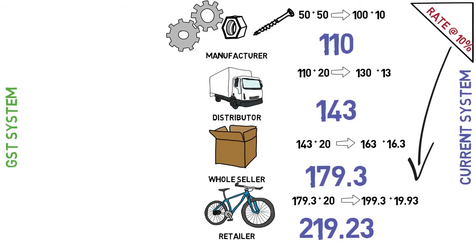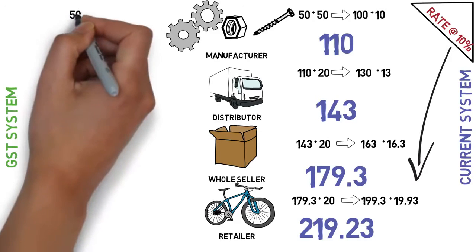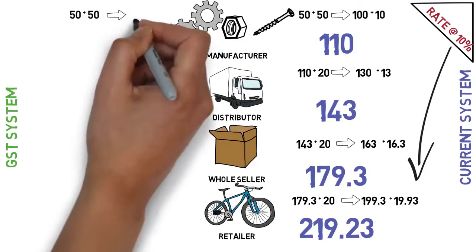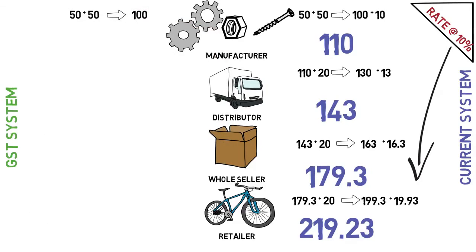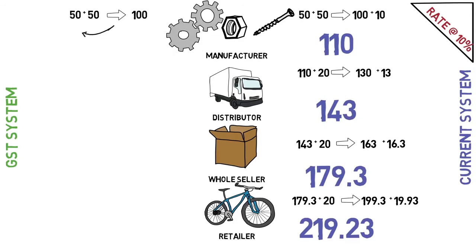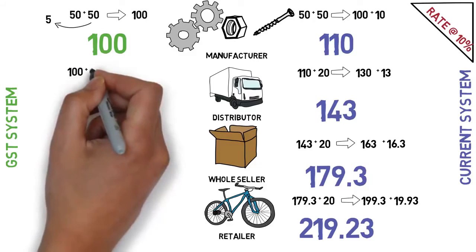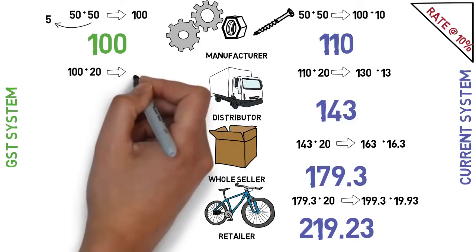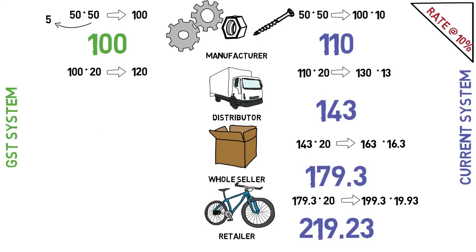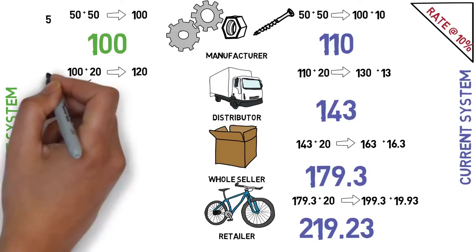Now we will take the same example under the GST system. Raw material of Rs. 50 and manufacturing value of Rs. 50 make the product worth Rs. 100. But this time the manufacturer pays taxes only on the value added by him, which is Rs. 50. So he pays 10% of Rs. 50, which is Rs. 5, as tax from his profit. The selling price does not increase, and the cost of the product for the distributor remains Rs. 100. The distributor adds Rs. 20 profit, making the product Rs. 120, and pays tax of Rs. 2 on his profit of Rs. 20.